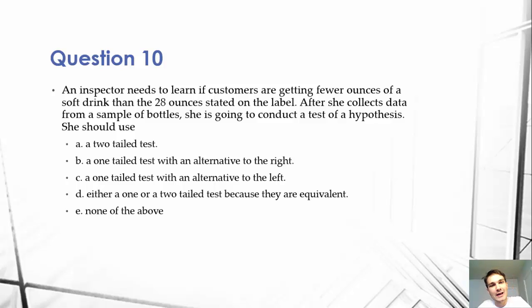An inspector needs to learn if customers are getting fewer ounces of a soft drink than the 28 ounces stated on the label. After she collects data from a sample of bottles, she's going to conduct a test of a hypothesis. She should use: a two-tailed test, b a one-tailed test with an alternative on the right, c a one-tailed test with an alternative on the left, or d either a one or two-tailed test because they are equivalent.